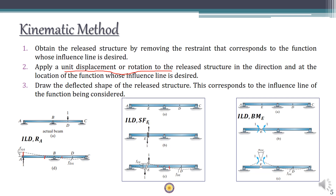Similarly, for the ILD for bending moment at E, we remove the beam's capacity to resist bending moment at E by inserting a hinge at E. We then apply a positive unit couple at the hinge, and the beam rotates accordingly to give the deflected shape. The compatibility conditions require that vertical displacements at all supports (delta at C, B, and A) equal zero, and that the rotation on either side of intermediate supports is equal — theta BC equals theta BA.